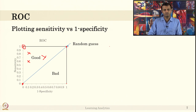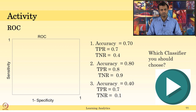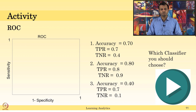Let us do a small activity and then we will come back to the ROC curve in detail. You have values for accuracy, TPR, and TNR. You know that TNR is specificity. So we need to compute 1 minus specificity (false positive rate) and true positive rate. You have three classifiers and their performance is given. Use the ROC curve to plot and pick the right classifier. After you pick a right classifier, please resume the video to continue.